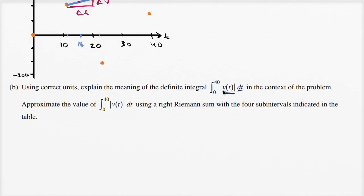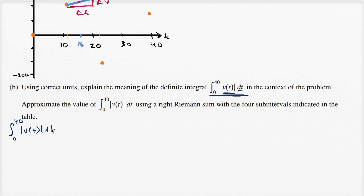So the distance — remember the difference between distance and displacement — displacement is the net distance. If you go back and forth a bunch of times, the trips add up to total distance, but they net out with respect to each other in displacement. So this integral gives us the total distance, not displacement, that she travels over those 40 minutes. If there were no absolute value sign, we'd be talking about displacement.